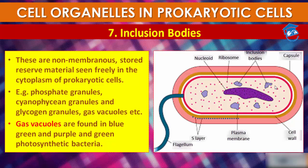Inclusion bodies lie freely in the cytoplasm. For example, they may contain phosphate granules, cyanophycin granules, or glycogen granules. They can also contain gas vacuoles, which are found in blue-green, purple, and green photosynthetic bacteria.